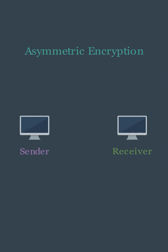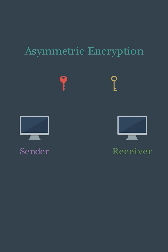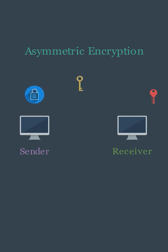In asymmetric encryption, the receiver generates the private and the public key. The public key is mathematically derived from the private key. However, deriving the private key from the public key is not feasible. The receiver then keeps the private key to itself and makes the public key publicly available. The sender uses the public key of the receiver to encrypt the file that it wants to send.